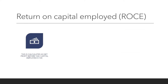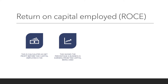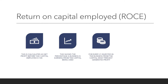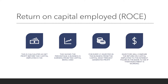Return on capital employed. This is calculated as net profit before tax divided by capital employed, times by 100. This shows the percentage of the business's earnings from the capital being used — for every one pound invested in the business from the capital, what percent of it generates profit? Investors will compare the return on capital employed to the interest figure that the bank has, to see if their investment is working.